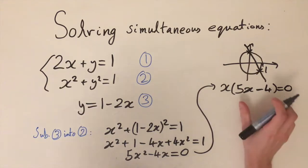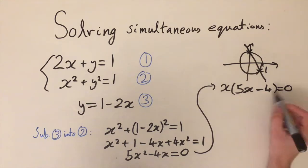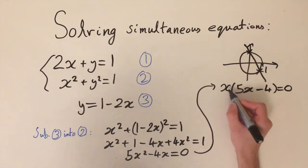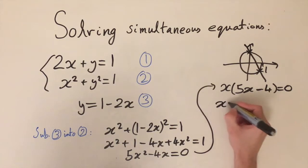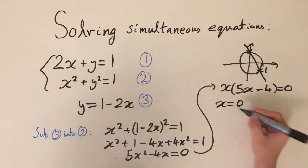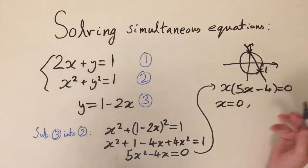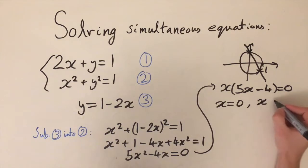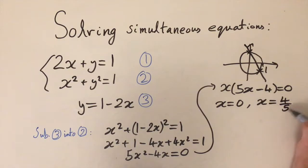Taking x out as a factor, we get x times (5x minus 4) equals 0. To solve this, we consider each factor equal to zero. If x equals 0, that's clearly true, so x equals 0 is one solution. Setting the bracket equal to zero gives x equals 4 over 5. You can check: substituting in, the 5s cancel and we get 4 minus 4, which is 0.